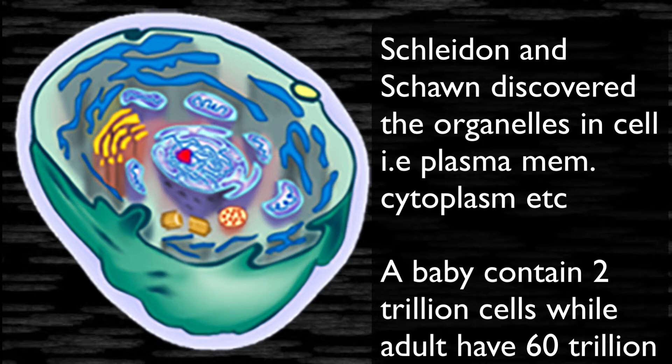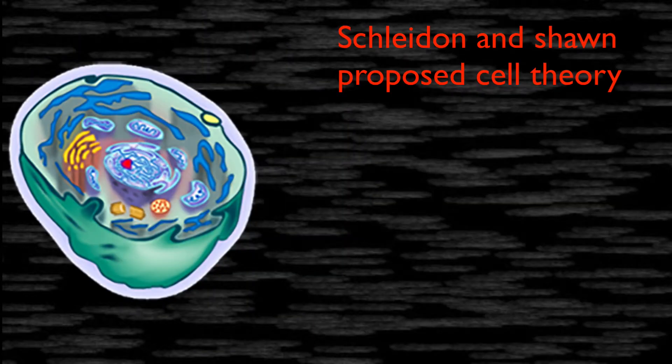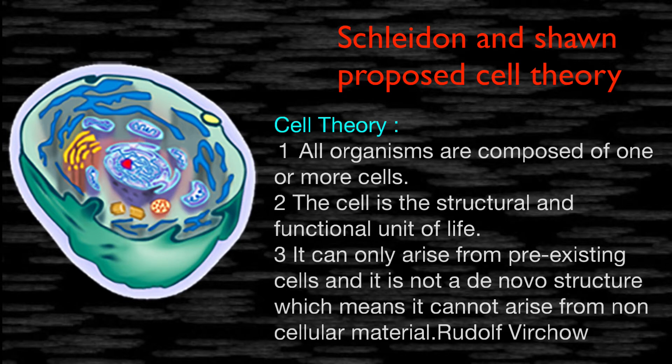A baby contains 2 trillion cells, and an adult has 60 trillion cells in their body — this can be useful for MCQs. Schleiden and Schwann proposed the cell theory, in which they added two points, while the third point was added by Rudolf Virchow.